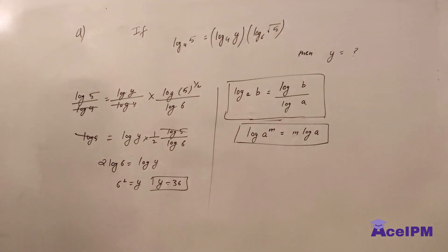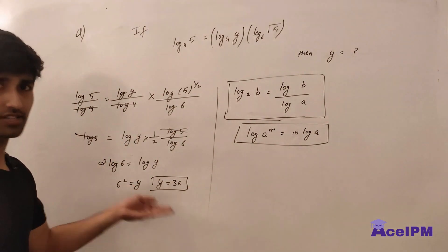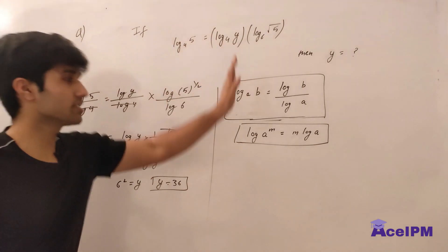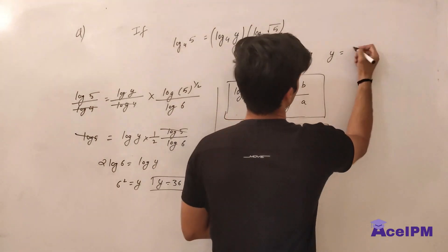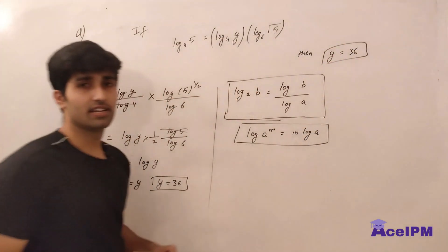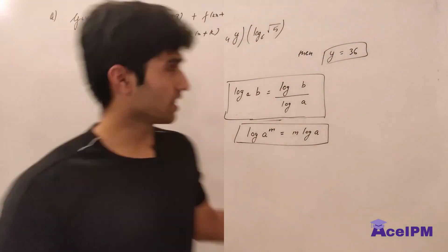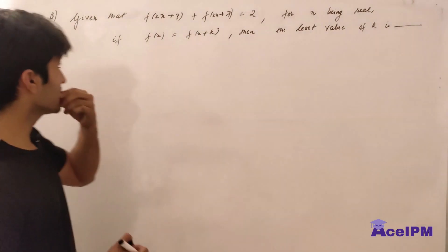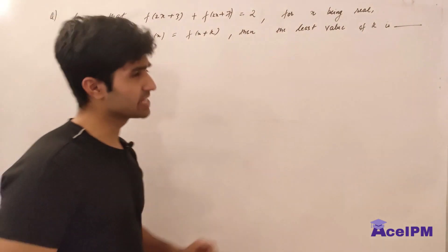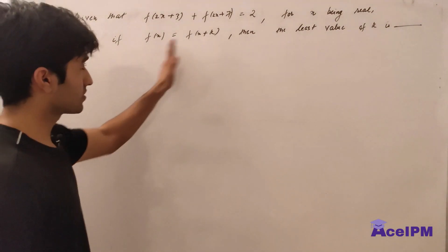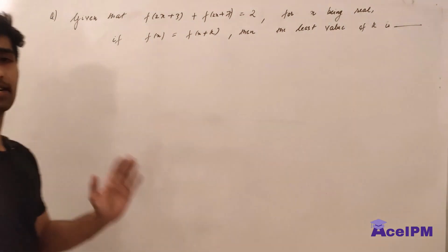The answer is Y equals 36. This is a pretty simple question — I would have definitely attempted it in round one. Now let's solve the functions question, also from the same mock. It was given that f(2x+3) + f(2x+7) = 2 for all real x. If f(x) = f(x+k), find the least value of k.